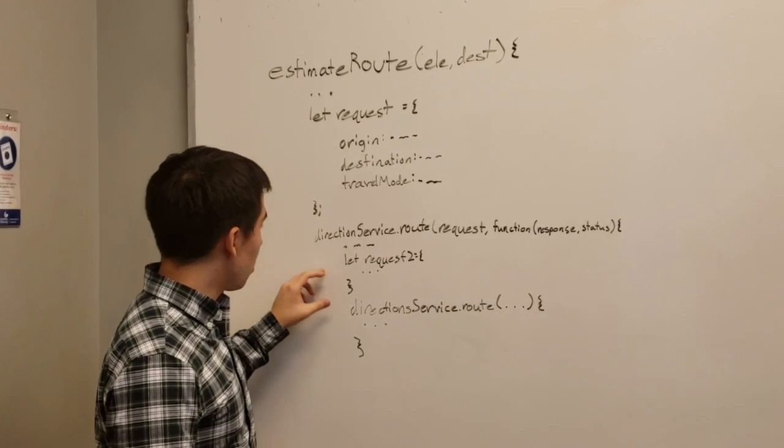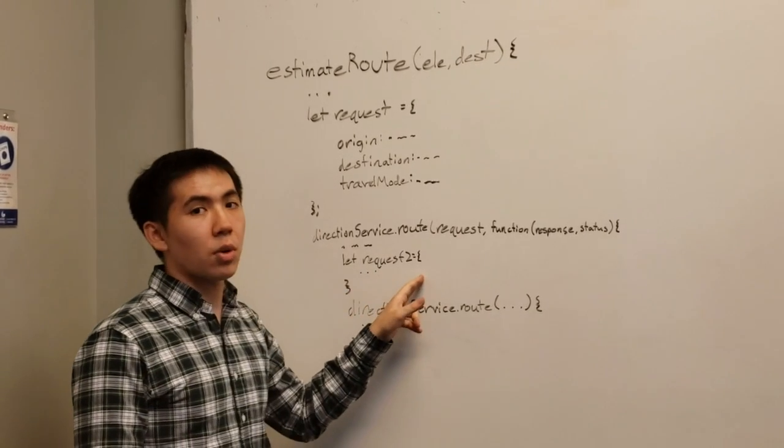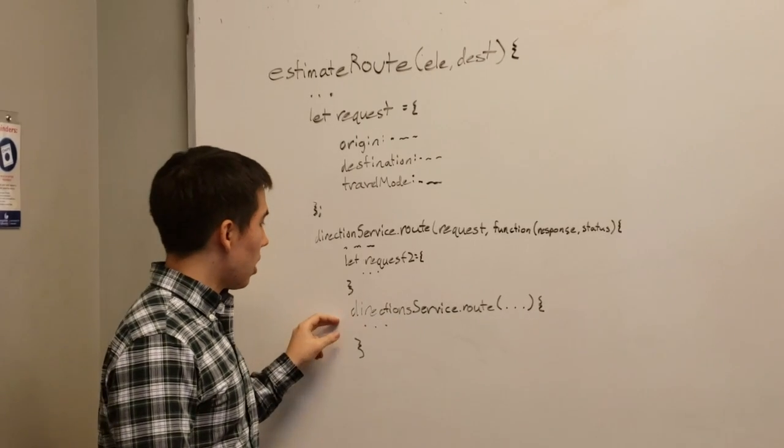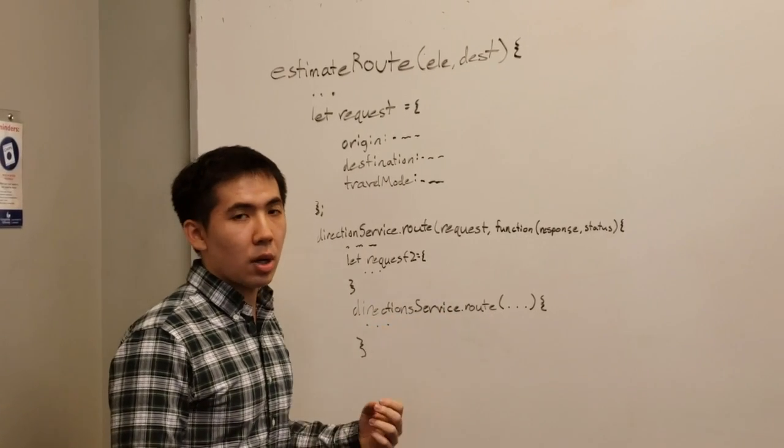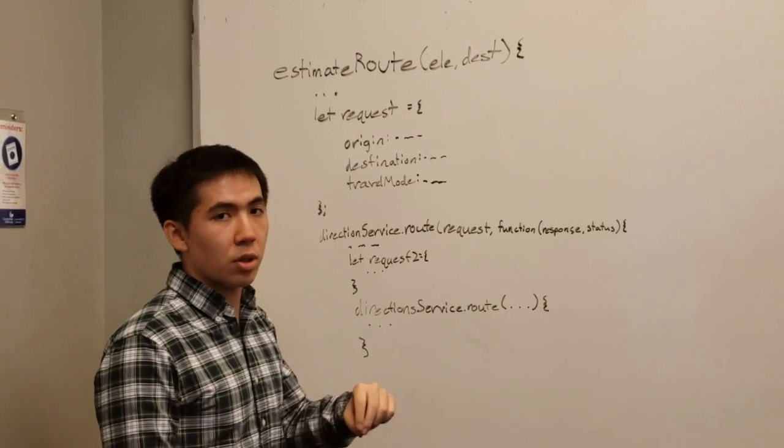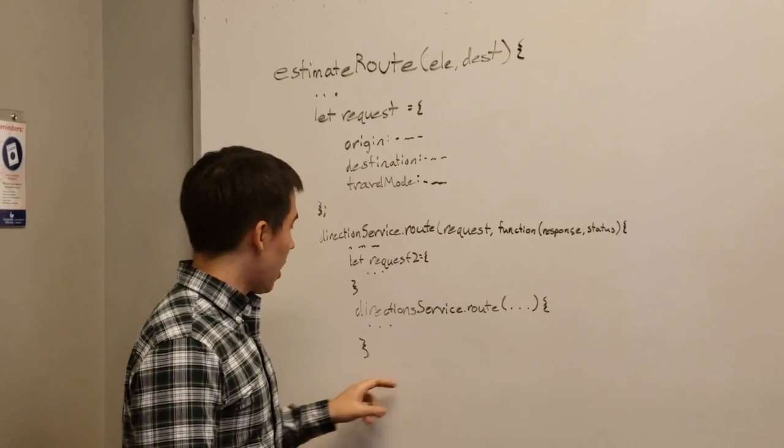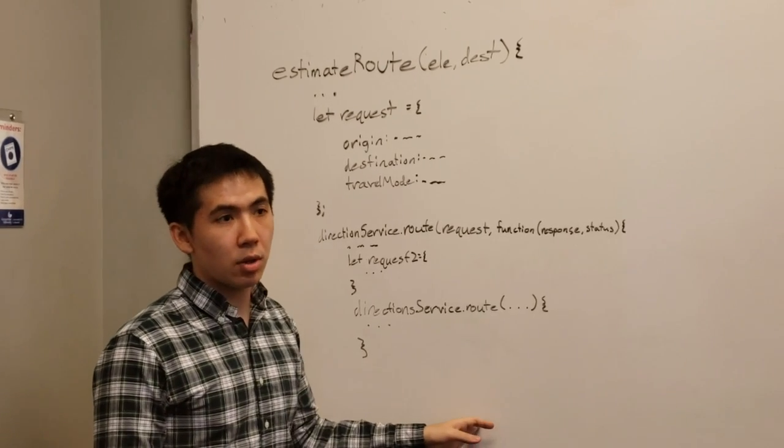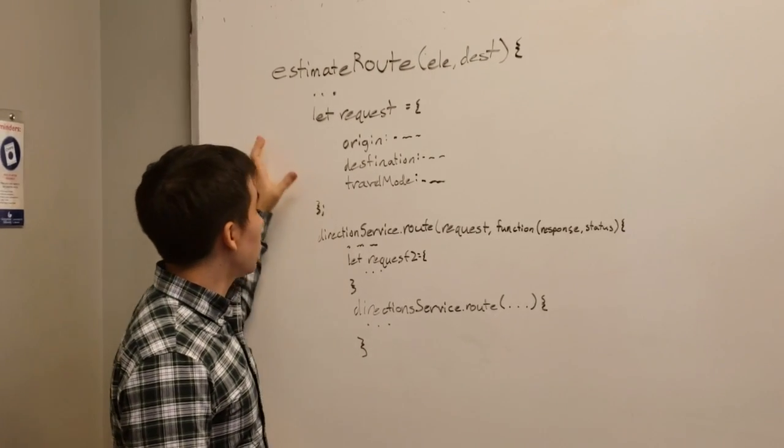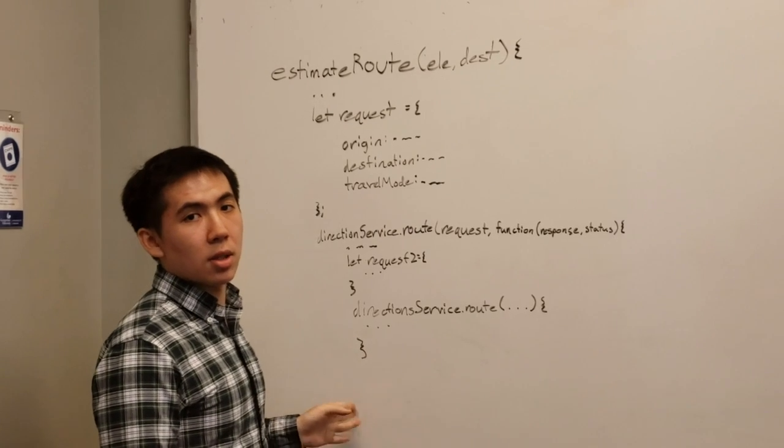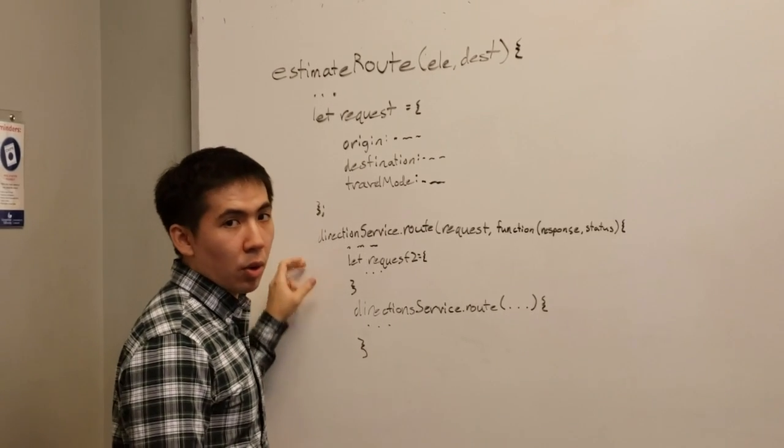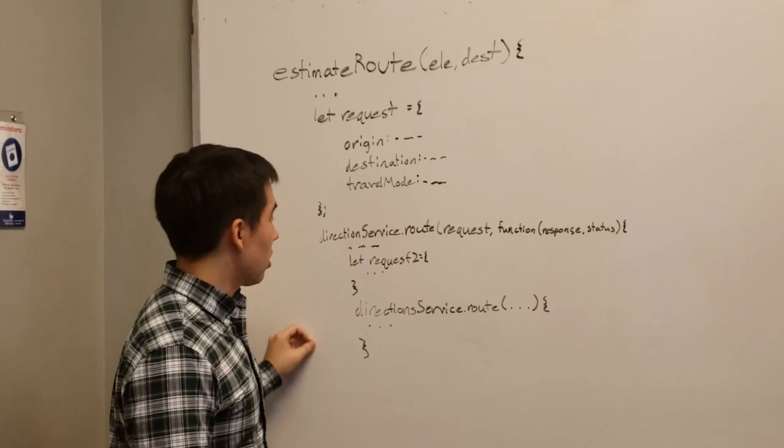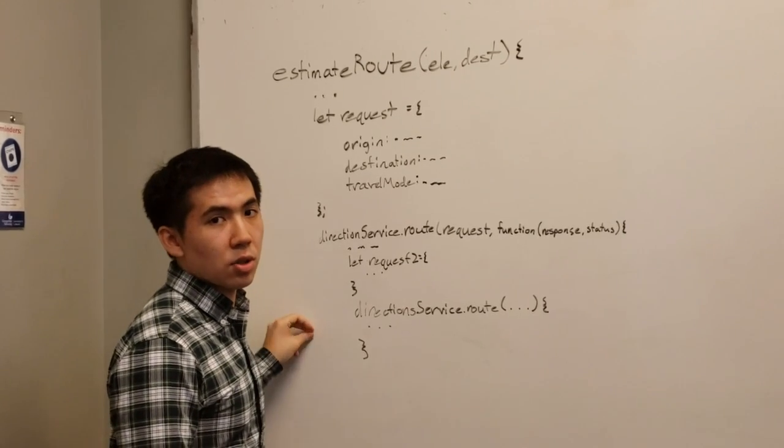And then we do it again with another request and send it to the direction service to get the arrival time for the user inputted stop and that is also sent to the web page in the form of a marker and info window. We do it in a nested format because that way we can check for errors at one stage and then easily terminate the process if there's an error.